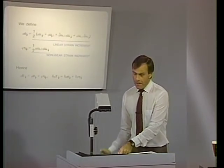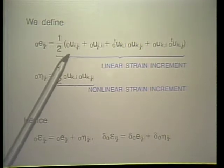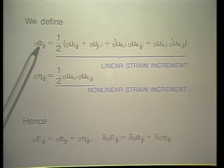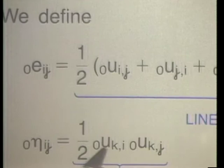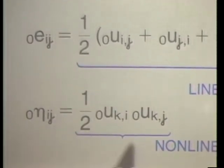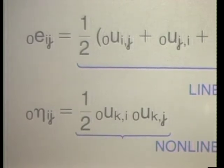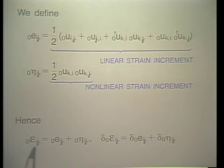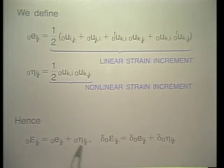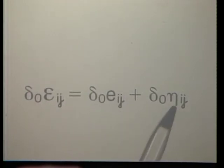We define a linear strain increment 0eij and a nonlinear strain increment 0eta_ij. The nonlinear term contains the quadratic terms. Adding these two gives back the total strain increment from time t to time t plus delta t. Taking a variation on that increment is equivalent to taking a variation on both the linear and nonlinear terms.